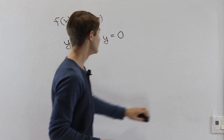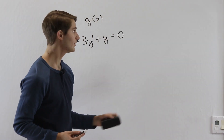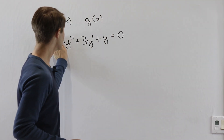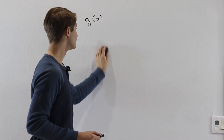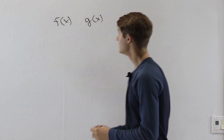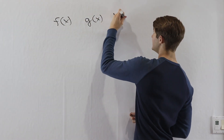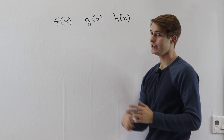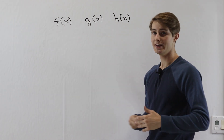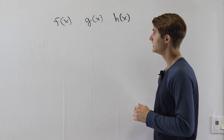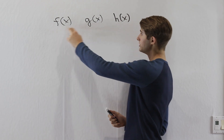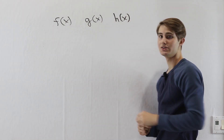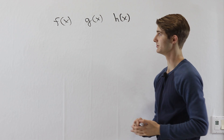In order to understand higher order cases, we also have to talk about how linear independence works when we have more than two functions. If we have f of x, g of x, and h of x, we say that these functions are linearly independent if there is no way to add up constant multiples of all of them and get zero, unless we just make all of the constants zero.